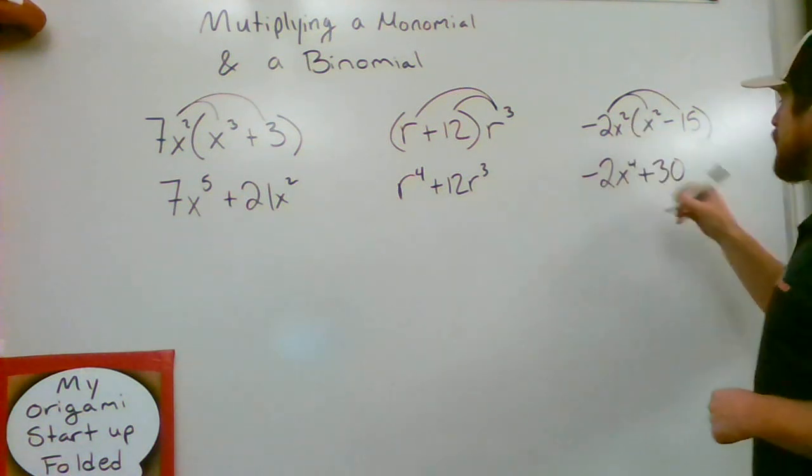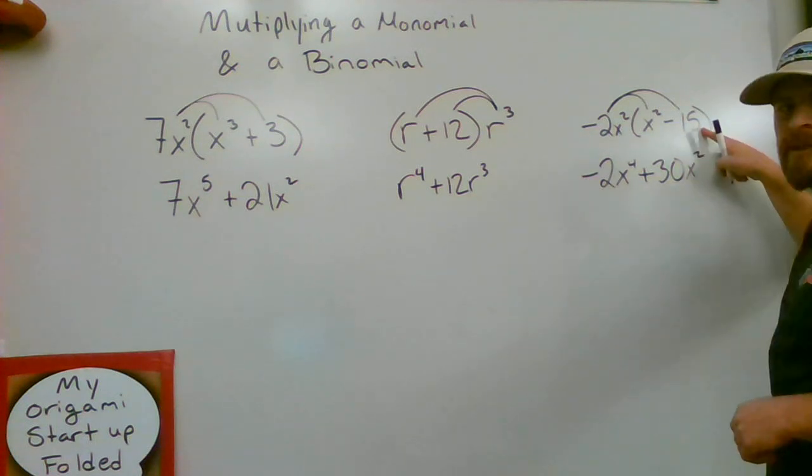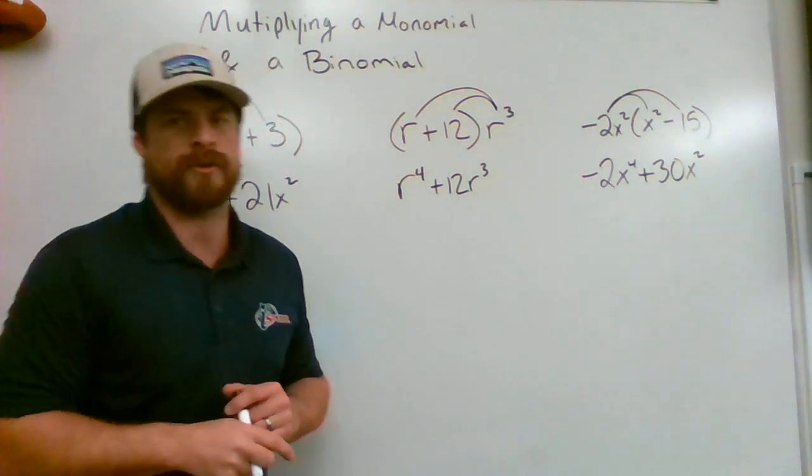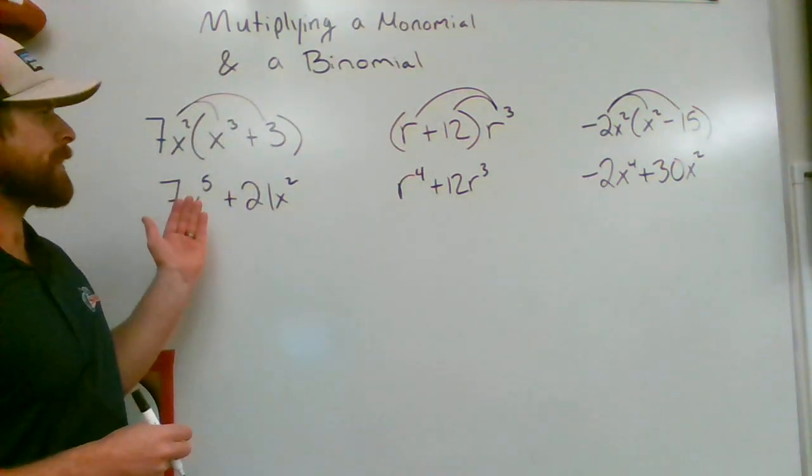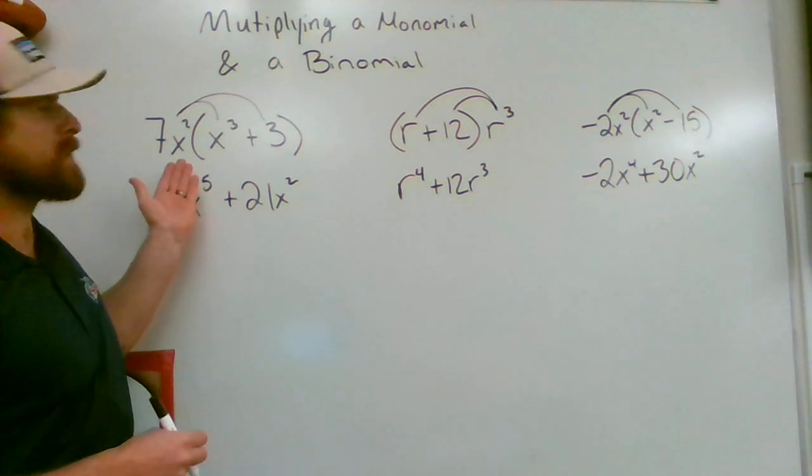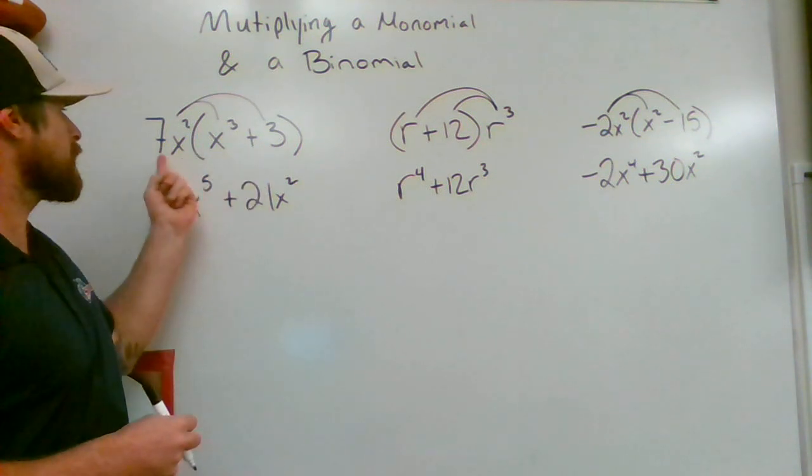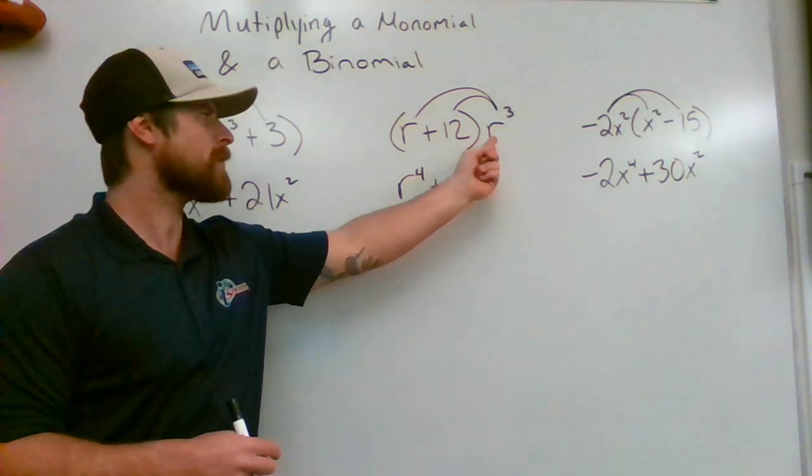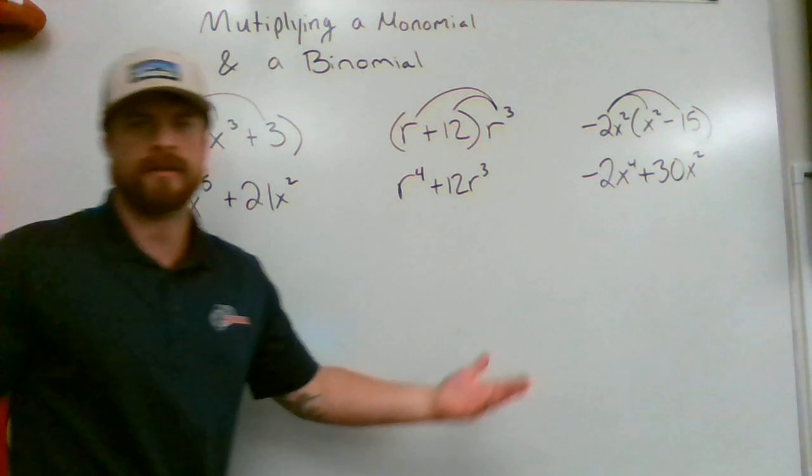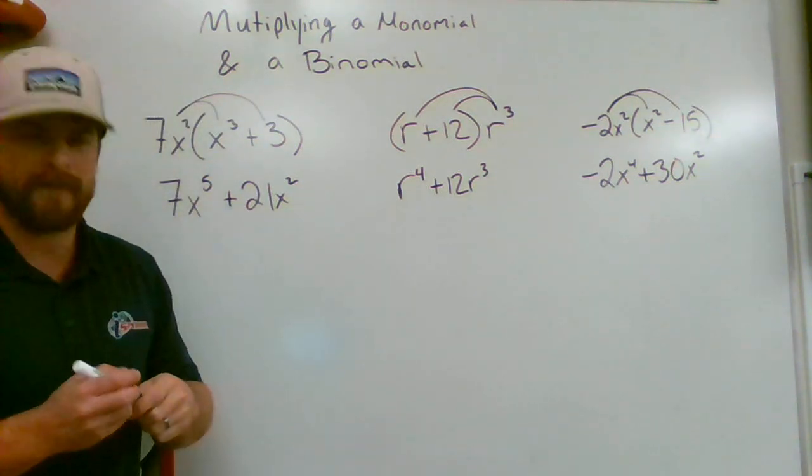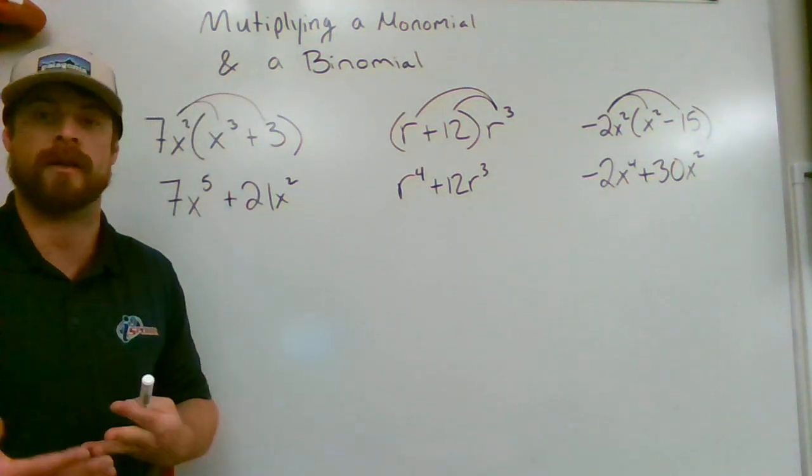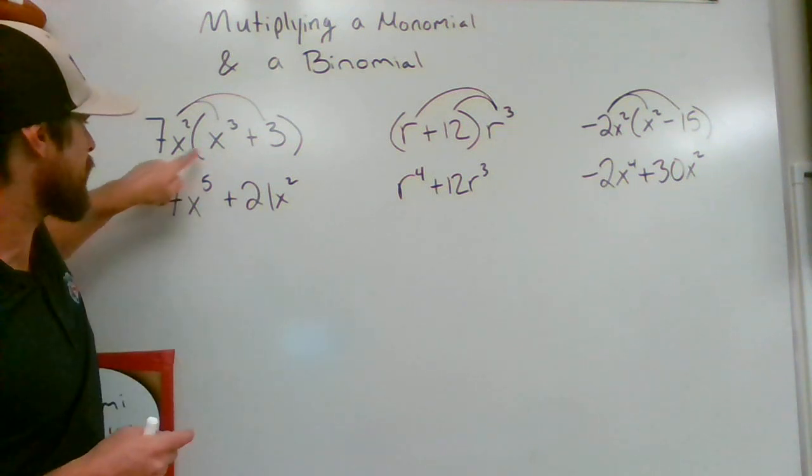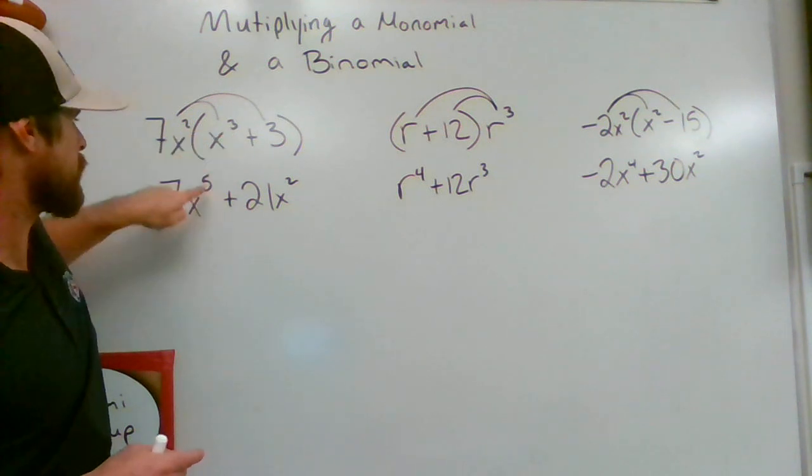So here are three different scenarios where a monomial is being multiplied by a binomial. Singular term times two terms on the inside. We're using the distributive property. And on top of that, we also have to understand what the product rule of exponents does. And basically all that says is when bases are the same, add your exponents.